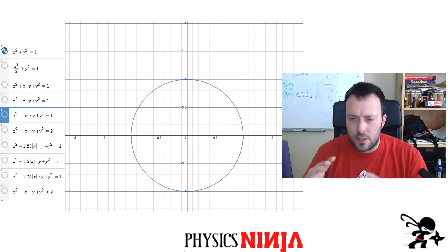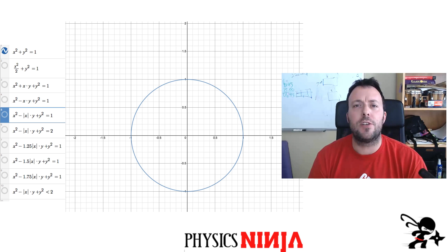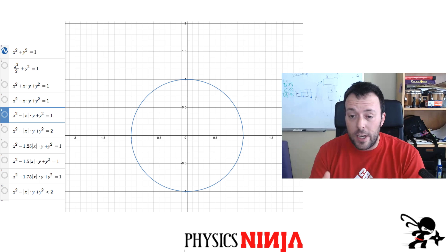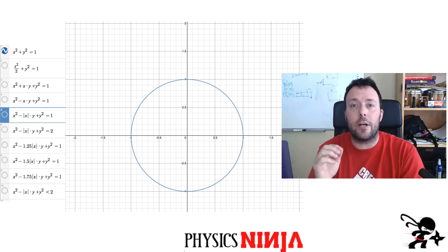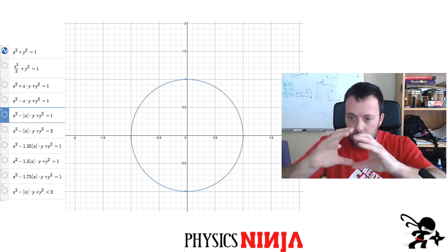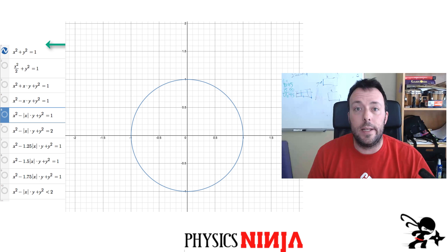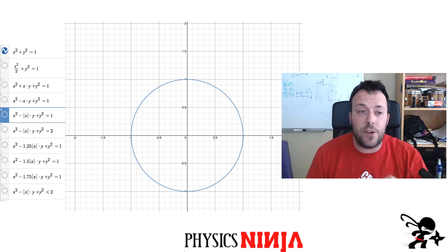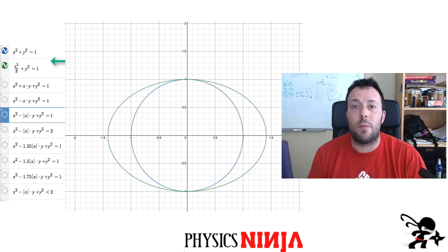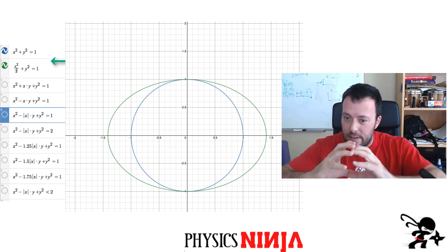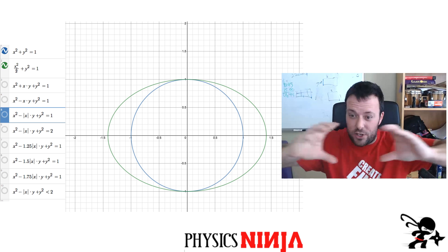We're going to start off with a simple geometrical shape, which is just a circle. The equation for this circle, which has a radius equal to 1, is simply x squared plus y squared equals 1. Now, what if I wanted to kind of stretch out the circle a little bit and make it into an ellipse? One thing you could do is introduce a coefficient or a number in the front of the x squared term. So the next one I have is I've multiplied the x squared term by one half. Look at what happens. I've taken that circle and I've kind of stretched it out a little bit.